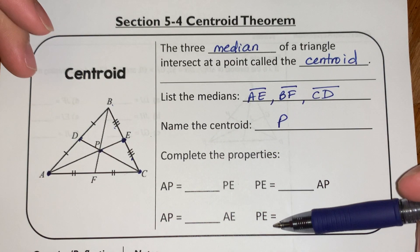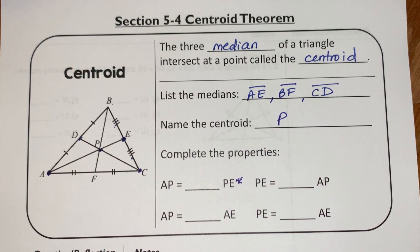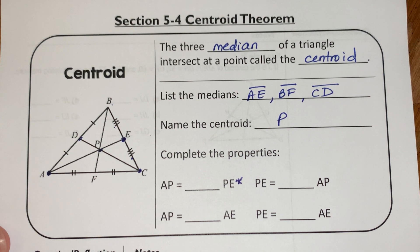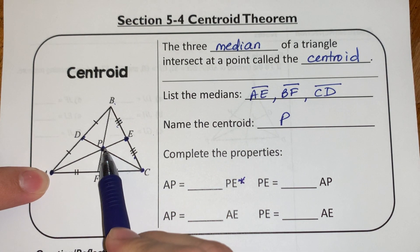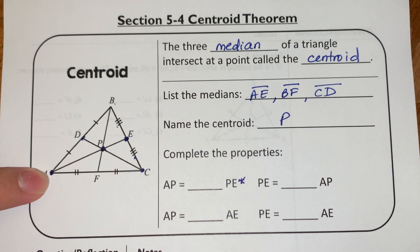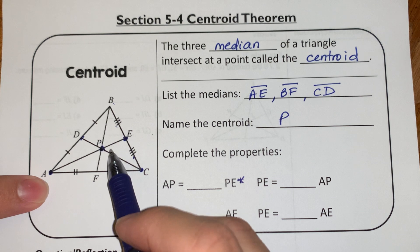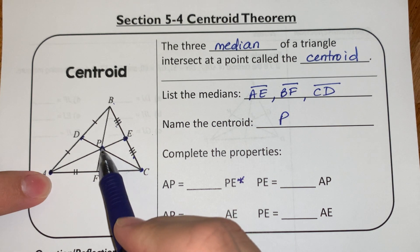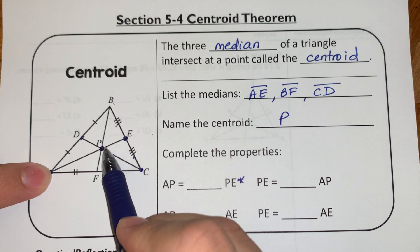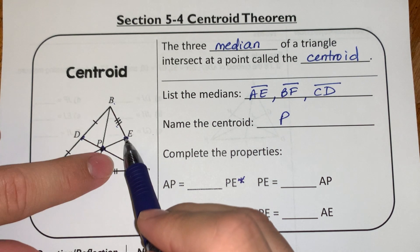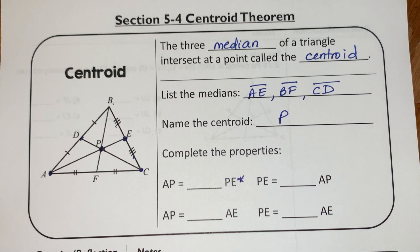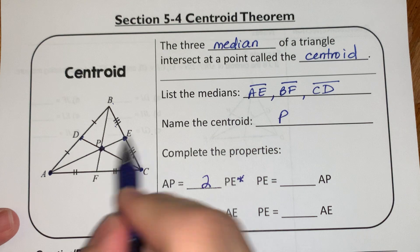Now, as far as what the properties of this centroid are, this is ultimately the one that I use the most. What you need to understand about the centroid, and this is very critical, the distance from A to P. If I want to know the distance from A to P, I have to remember that this distance is double whatever the side from P to the side is. So from my vertex to my centroid, this distance is double whatever this side is from the center to that side. So AP is double whatever PE is.